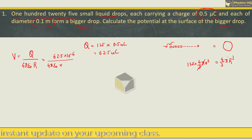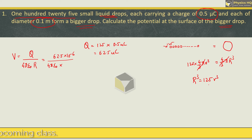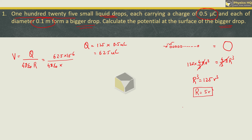The 4 by 3 pi cancels on both sides. What we get is capital R cube equals 125 small r cube. Or you can say capital R is 5 times the small r. Now small r is nothing but 0.05 meter, because the diameter given is 0.1 meter for each small drop.